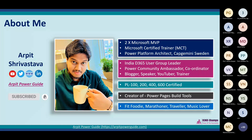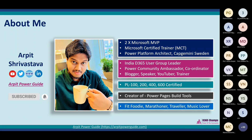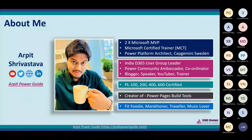A quick introduction about me: my name is Arpit Shrivastav, and I'm a two-times Microsoft MVP in business applications and a Microsoft Certified Trainer. I'm working as a Power Platform Architect at Capgemini, Sweden. I'm originally from Pune, India. I'm also the Dynamics 365 user group leader of the India Microsoft Community and ambassador and coordinator of the Power Community. I've been blogging since 2014 and am an active speaker in many communities. I upload recordings of events and interesting project work to my YouTube channel.